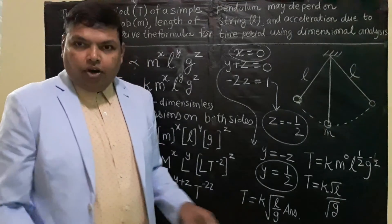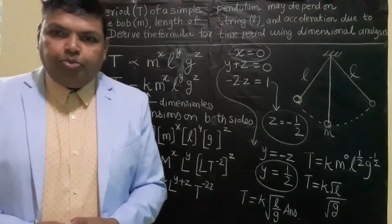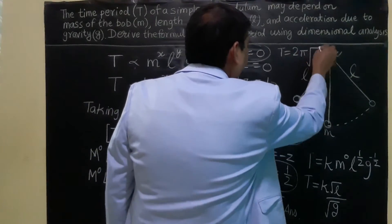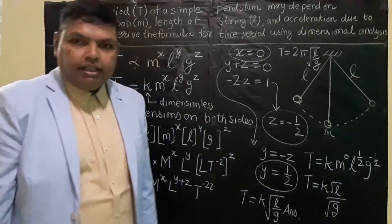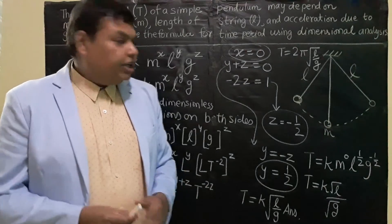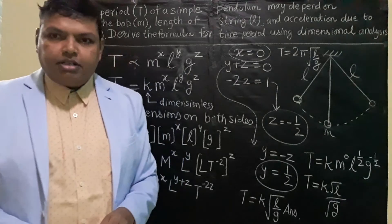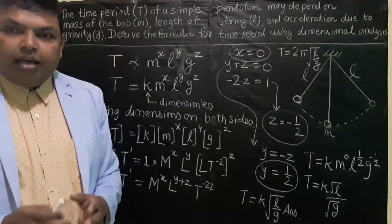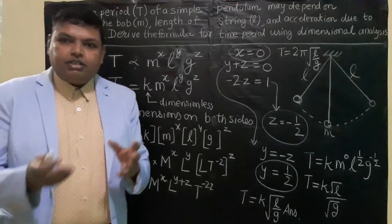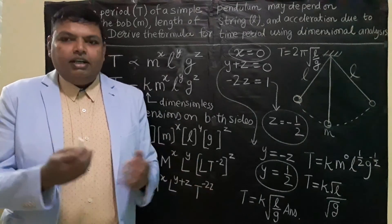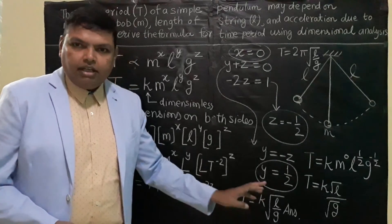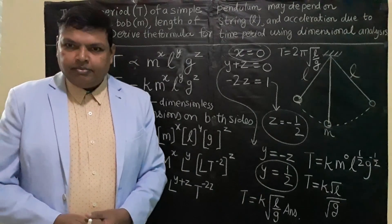What about the constant K? We already know from the chapter on simple harmonic motion that T = 2π√(L/G), so K = 2π. Unfortunately, by this method of dimensional analysis we cannot find the value of K, because dimensional analysis can only give us dimensional answers. Since we assumed K is dimensionless from the beginning, the dimensional method cannot determine it. So K remains as a constant, and T = K√(L/G) is our final answer using dimensional analysis. Thank you for watching.